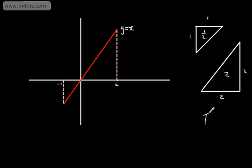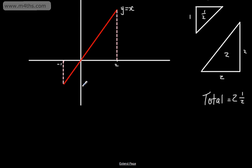So we can see now that we have a total area trapped between the function y = x and the x-axis of 2.5 — total is equal to 2 and a half. We saw that we could use integration between two x-coordinates to find the area trapped under the curve, so the area should equal the integral from -1 to 2 of x dx.